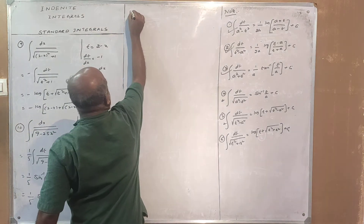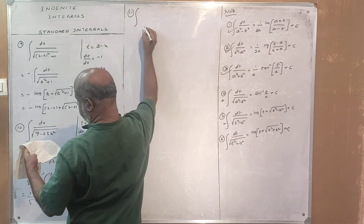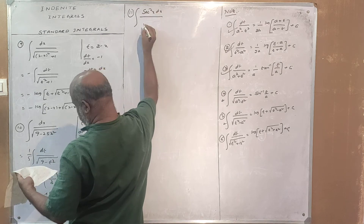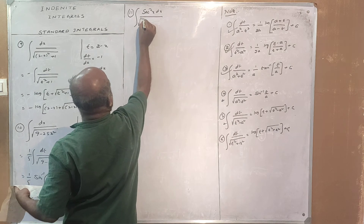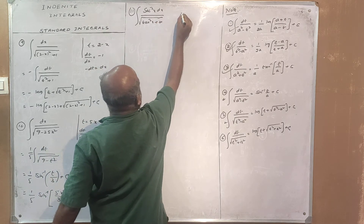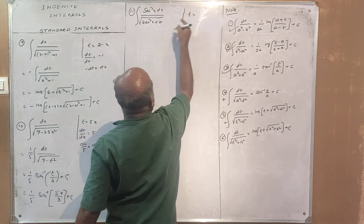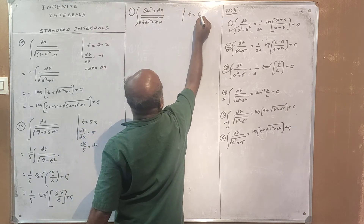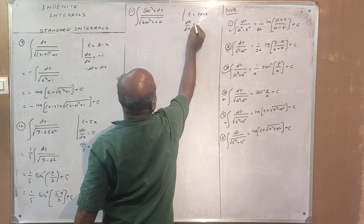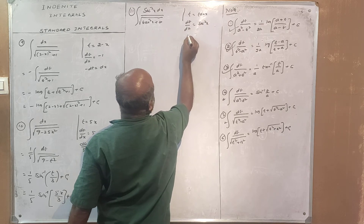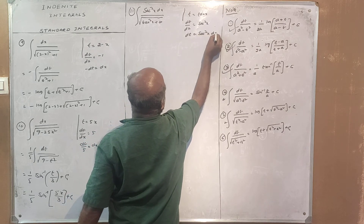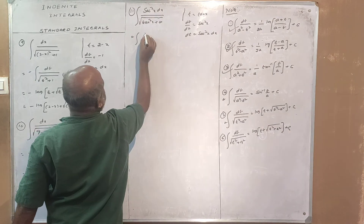Next, integral of sec squared x into dx divided by root of tan squared x plus 4. In this case, let t equal tan x, so dt divided by dx equals sec squared x, and dt equals sec squared x into dx. Substituting, the integral becomes dt divided by root of t squared plus 4.